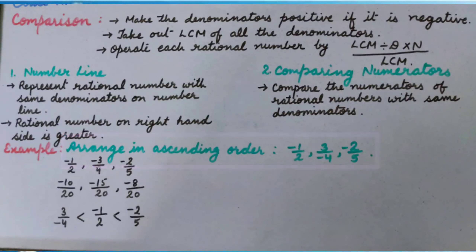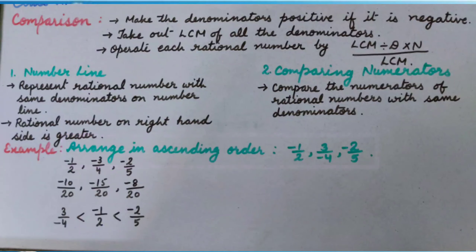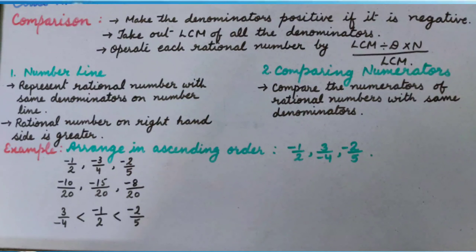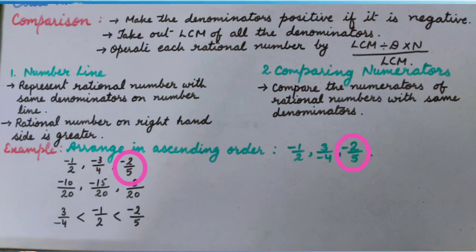For example, arrange the following in ascending order: minus 1 upon 2, 3 upon minus 4, minus 2 upon 5. First of all, we will make the denominator positive if it is negative. So we get: minus 1 upon 2, minus 3 upon 4, and minus 2 upon 5.